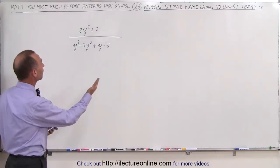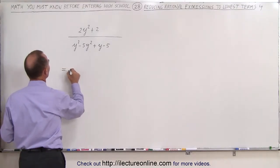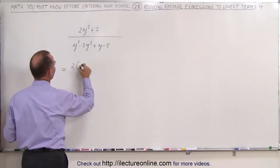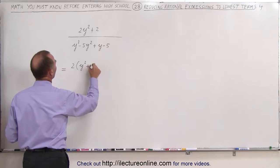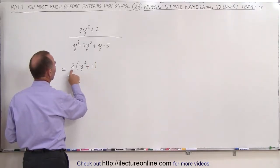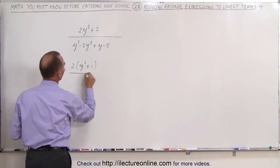In the numerator, at least, we can factor out a 2. So let's start with that. This is equal to 2 times, and what we have left is y squared plus 1. If you multiply this times this, you end up back with the numerator you started with.